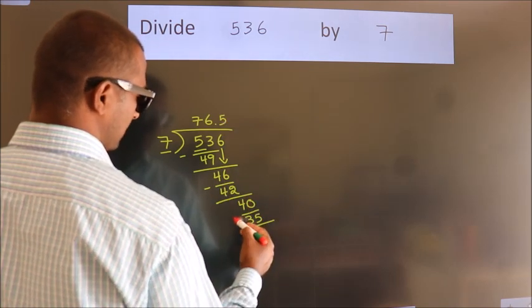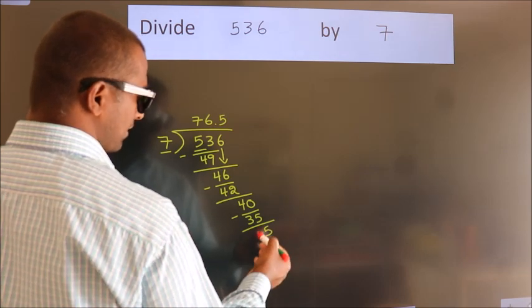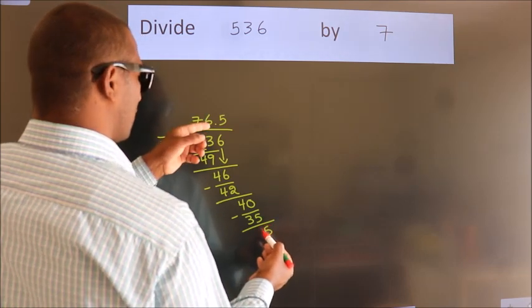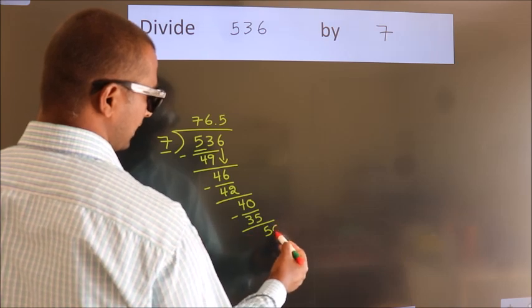Now we subtract. We get 5. After this, we already have the decimal, so directly take 0.